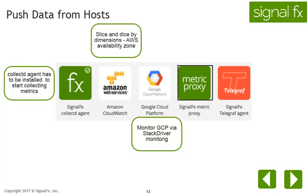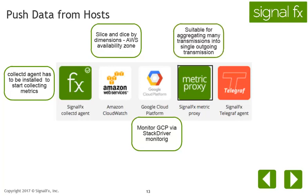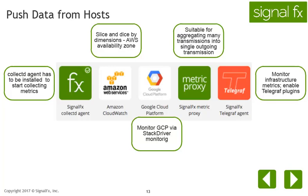SignalFX also provides a Stackdriver-powered mode for the infrastructure navigator. If collectd instances are unable to transmit outside the network, use the SignalFX metric proxy. With the metric proxy, you can receive connections from many instances of collectd and forward them to SignalFX using a single outgoing HTTP connection. This is suitable for environments in which transmissions exiting a network are highly restricted. You can also use the SignalFX Telegraph agent to send in metrics from your environment, and view the hosts monitored by this agent in the infrastructure navigator.